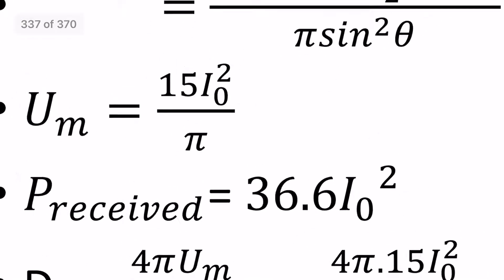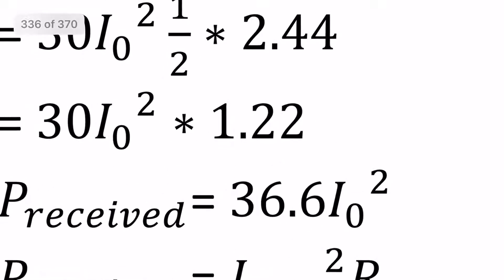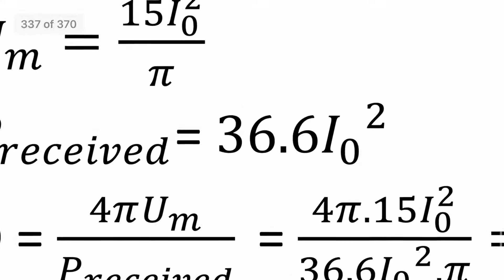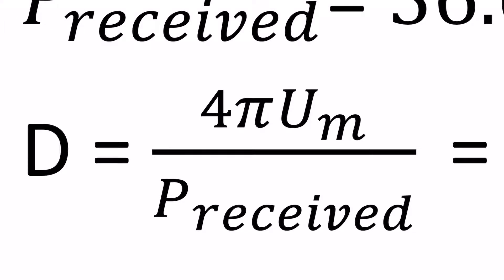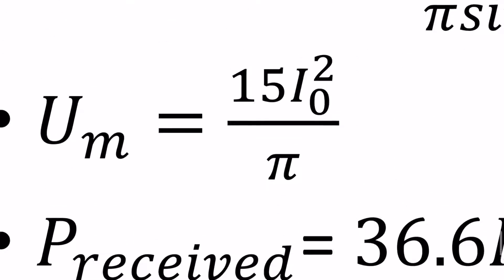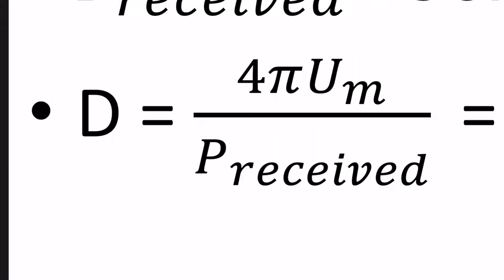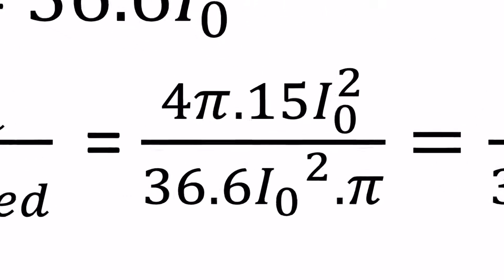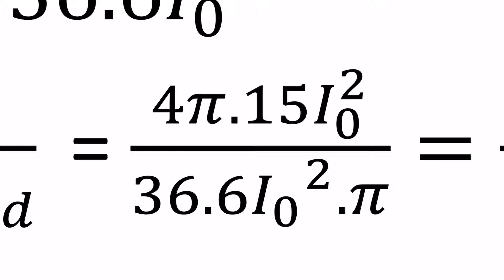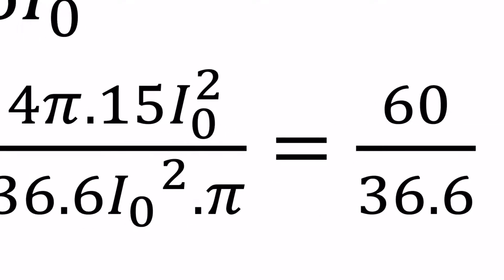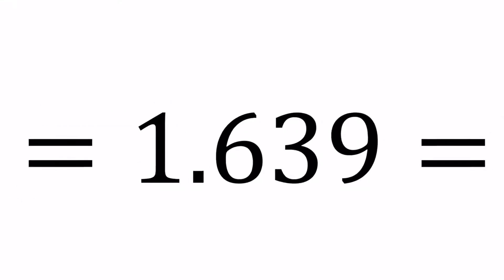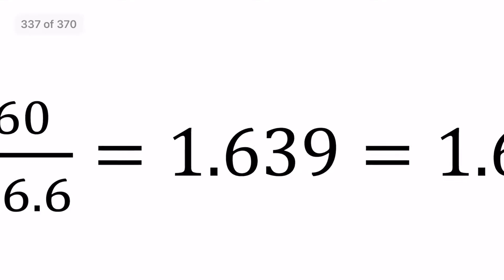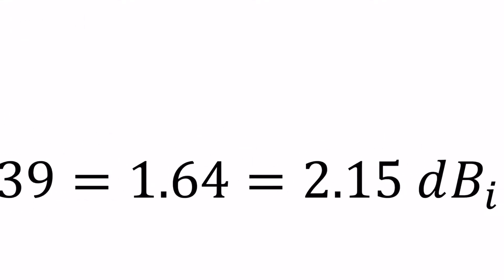Power received is 36.6 i₀². The directivity equation is D = 4π × U_max / P_total = 4π × (15 i₀² / π) / (36.6 i₀²). Common terms — pi and i₀² cancel — giving 60 / 36.6 = 1.639. So directivity is approximately 1.64, or 1.639 to be precise.